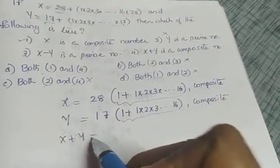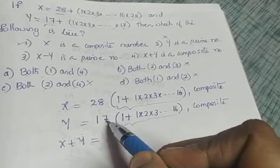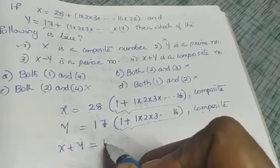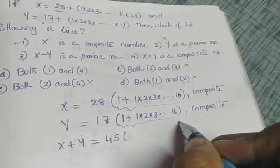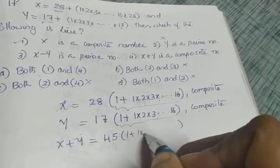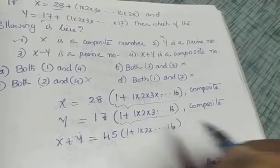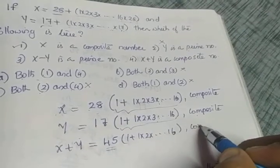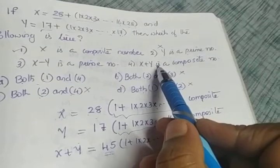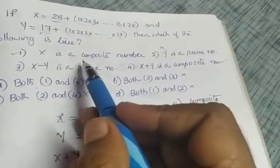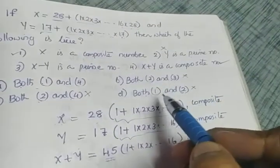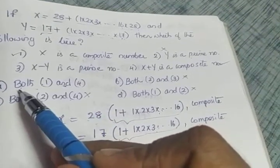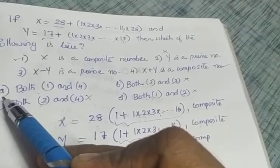We can also verify: x plus y = (28 + 17) × (1 + 1×2×...×16) = 45 × (bracket term), which is again a composite number. So statement 4 is true. Both statements 1 and 4 are true, confirming the correct answer is option A.